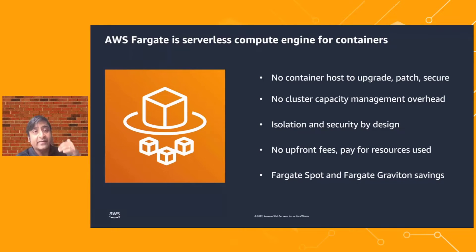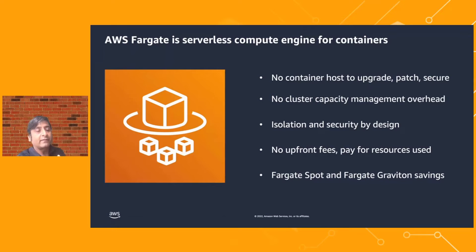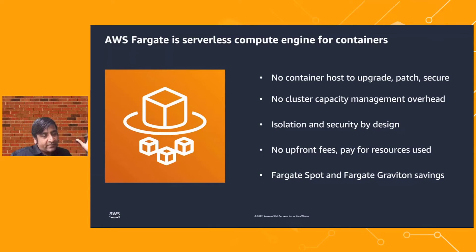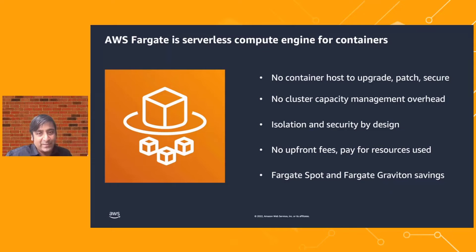Fargate also has Fargate Spot, which gives you surplus capacity at a heavy discount — 70 to 80% less cost. Think about your non-prod environments and dev/testing environments: you can run them on Fargate Spot and save a lot of money. We also added support for Fargate Graviton — our ARM-based processors. If you build your containers and application using ARM architecture, Fargate Graviton gives further savings: 40% overall price-performance benefit, with 20% better performance at 20% less cost. ECS lays the foundation for the no-PhD-required way of building modern applications and their pipelines.